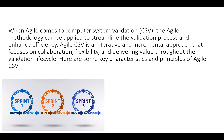When Agile is applied in computer system validation, this methodology can streamline the validation process so that we can enhance the efficiency of our work in CSV or CSA. Agile CSV is an iterative and incremental approach so that we can collaborate and be flexible to deliver the best validation, and the validation lifecycle can be fulfilled at a satisfactory level. So what are the key characteristics and principles of CSV with Agile?